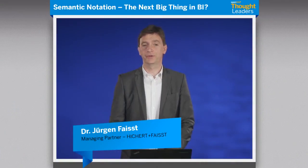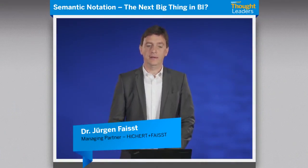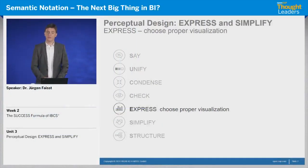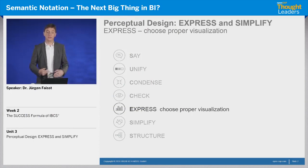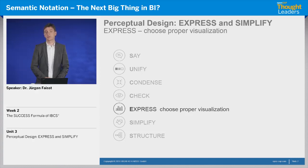Hello and welcome to the third unit of week two. In the last unit, Rolf introduced the conceptual rules of the success formula — talking about say and structure, about conveying a message and giving that message a good structure or storyline. Today, we will continue with the first perceptual rule set, the first perceptual step in our success formula.